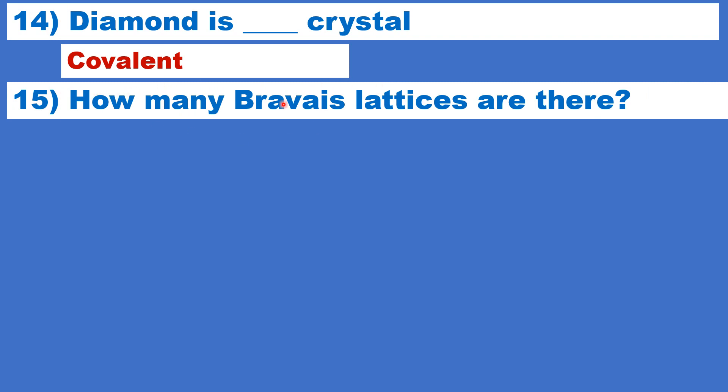Let us see the next question. How many Bravais lattices are there? There are fourteen. There are fourteen Bravais lattices. The lattice points can be arranged in fourteen different ways.